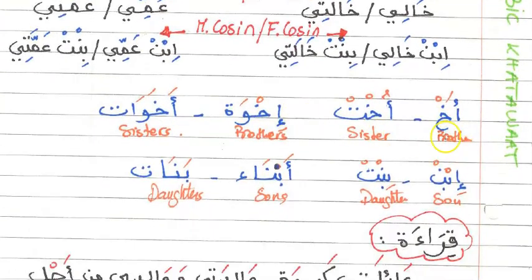The next set gives the isolated form of the words, without possession. We have akh for brother and ukht for sister. To say 'my brother' you add ya at the end: akhi. If you don't know someone's name you would address him as 'hey, akhi — my brother.' The plural of brother is ikhwa and the plural of sisters is akhawat.